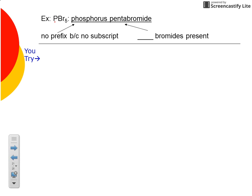For example, the formula PBr5 — you'd want your periodic table handy. Phosphorus is a non-metal and bromine is also a non-metal, so this is a molecular compound and we name it using the prefix system. Since there's only one phosphorus, there's no subscript, so no prefix is needed — we simply say phosphorus. There are five bromines, and the second element always has a prefix, so five gives us penta: pentabromide. The compound is phosphorus pentabromide.